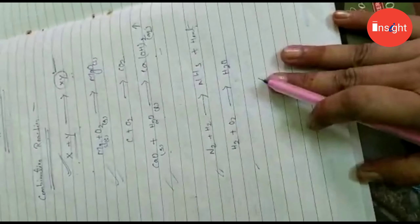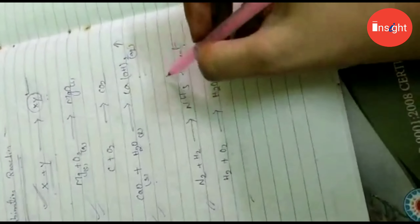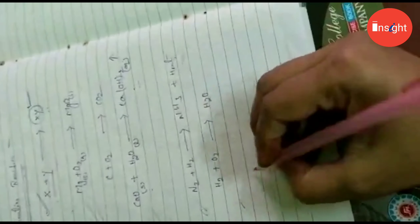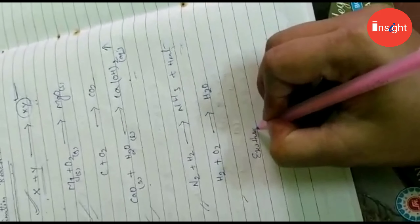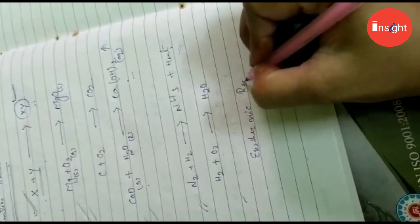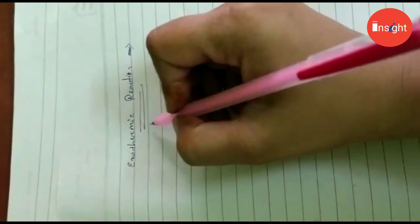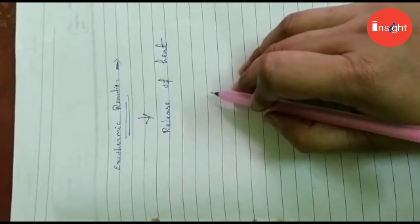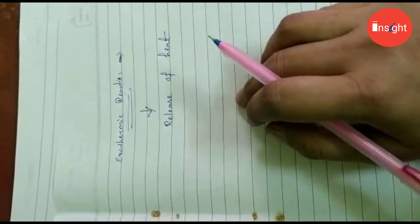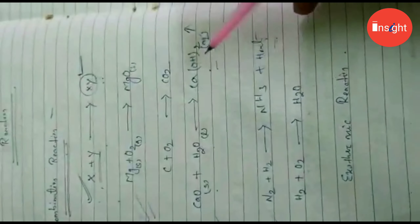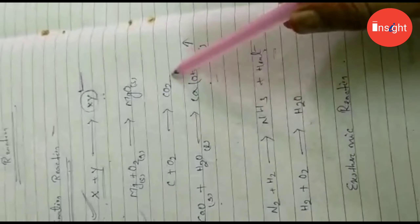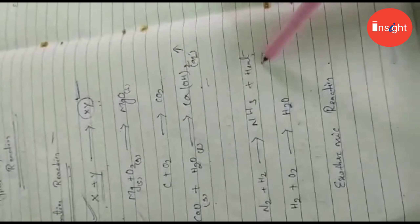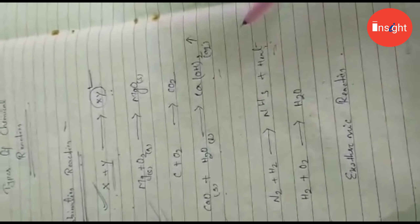We are seeing that in all these reactions, along with the product, some amount of heat is also released. When in a reaction heat is released, that reaction is called an exothermic reaction. Exothermic reaction means the release of heat — when heat is released in a chemical reaction, those reactions are called exothermic reactions.